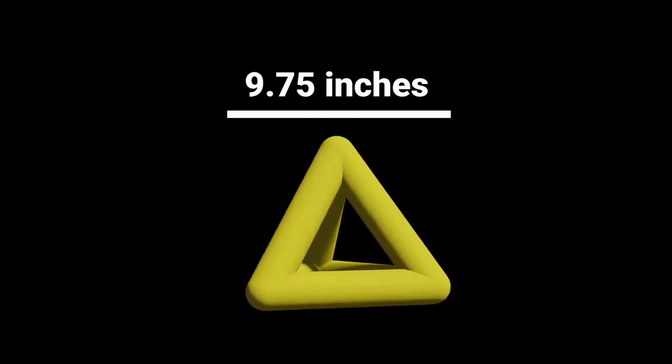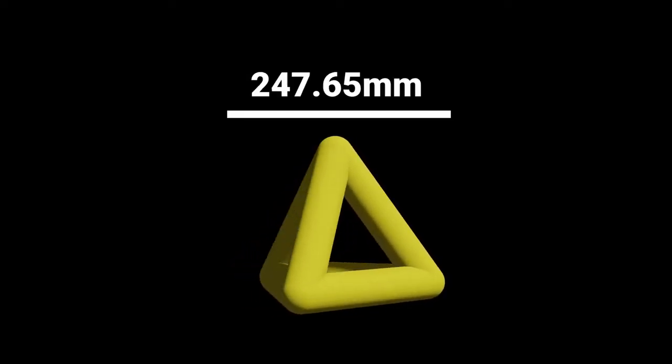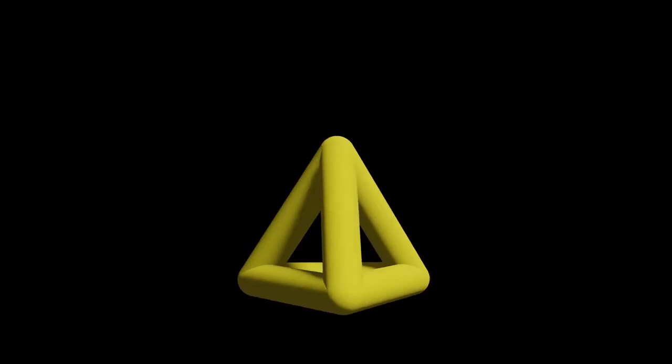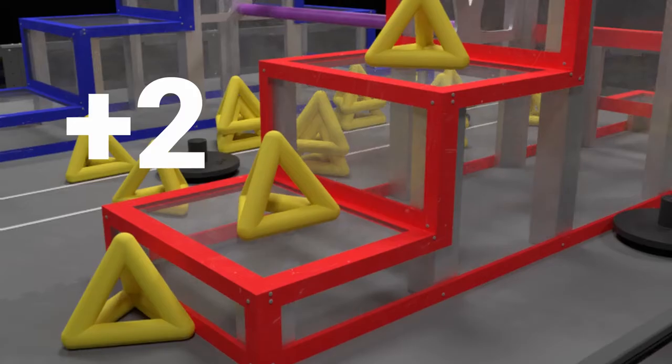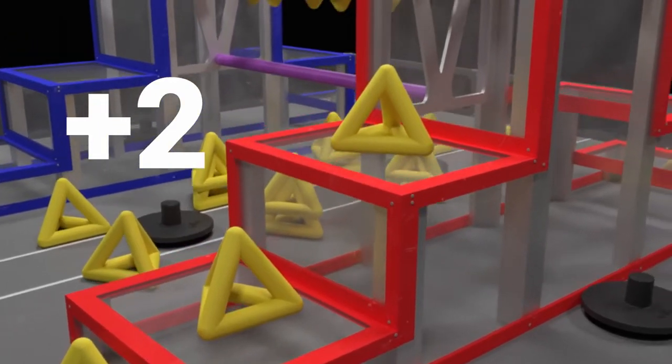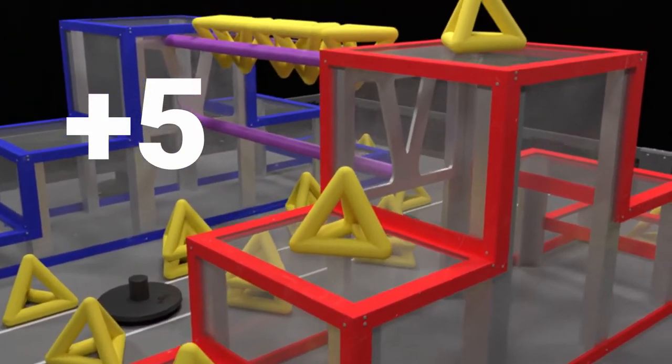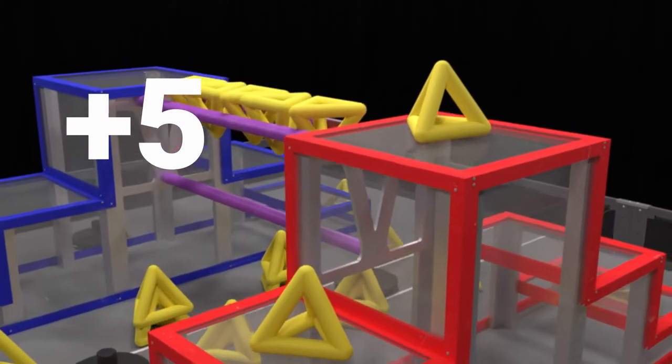Trophies are 9.75-inch or 247.65-millimeter triangular pyramids that weigh 1.75 pounds and are worth two points on low platforms, 5 points on middle platforms, and 9 points on high platforms.